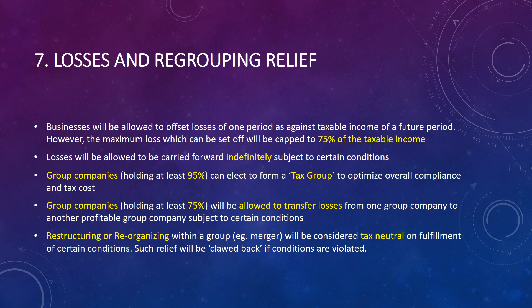Regarding losses and grouping: businesses will be allowed to offset losses of one period against taxable income of a future period. However, a maximum of 75 percent of taxable income can be offset by carried-forward losses. Losses can be carried forward indefinitely — unlike India's eight-year limit. To create a tax group, you must hold 95 percent or more shares in another company. Group companies will be allowed to transfer losses from one group entity to another profitable group entity if at least 75 percent common shareholding exists. Restructuring and reorganization can be done on a tax-neutral basis.